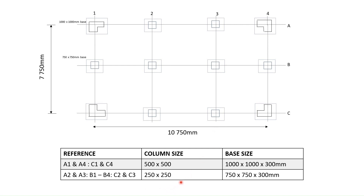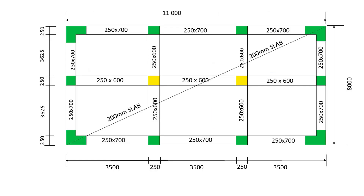Moving on to the second drawing, this is a floor plan layout providing a visual understanding of the concrete frame. I have highlighted some crucial elements to help you follow along. In green you can see the perimeter columns, and in yellow are our internal columns. We have perimeter beams measuring 250 by 700 millimeters deep, and internal beams measuring 250 by 600 millimeters deep.